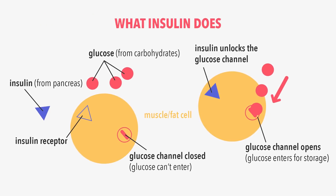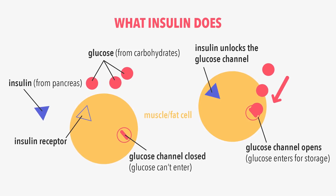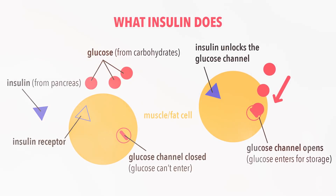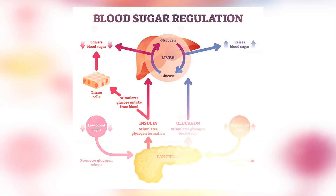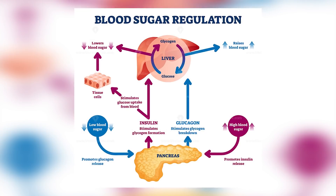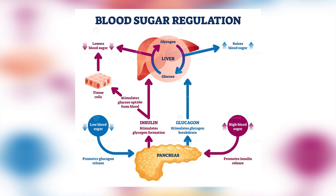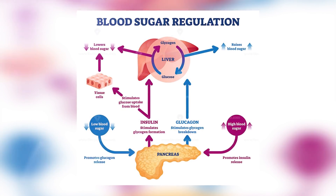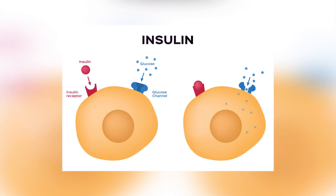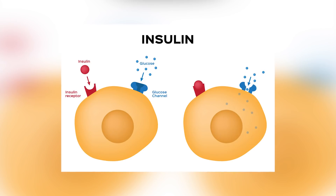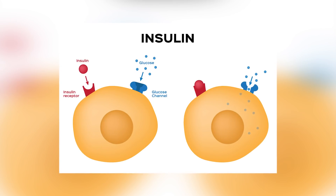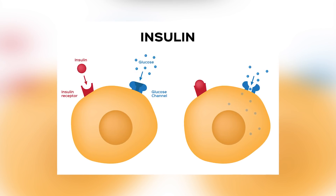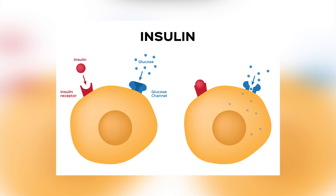Insulin is a hormone in our body that is responsible for signaling our cells to accept glucose, also known as blood sugar. When our blood sugar goes up, the pancreas releases insulin, which takes the excess glucose from our bloodstream to our cells — including our muscle cells, our brain cells, and our liver cells.